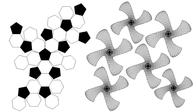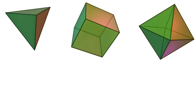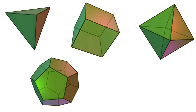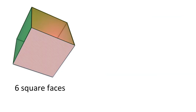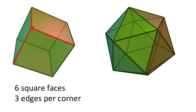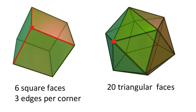First we need to understand the five platonic solids: the tetrahedron, the cube, the octahedron, the dodecahedron, and the icosahedron. Each of these solids has congruent faces. For example, the cube has six square faces and each corner is met by three edges, while the icosahedron has 20 triangular faces and each corner connects five edges.